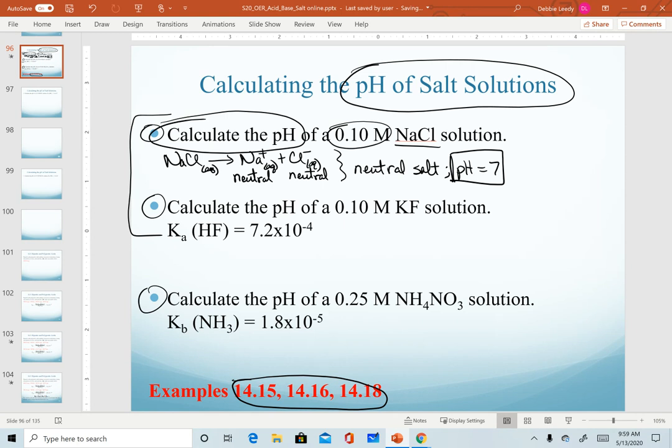On the next slide, we'll work through the solution for KF, but let's begin by predicting. If we look at the ions that make up this salt, we have potassium and fluoride. We know potassium is a neutral cation, and we know that fluoride is a basic anion. Therefore, this is a basic salt. So we will need to calculate the pH, but we do predict that it is going to be higher than seven.